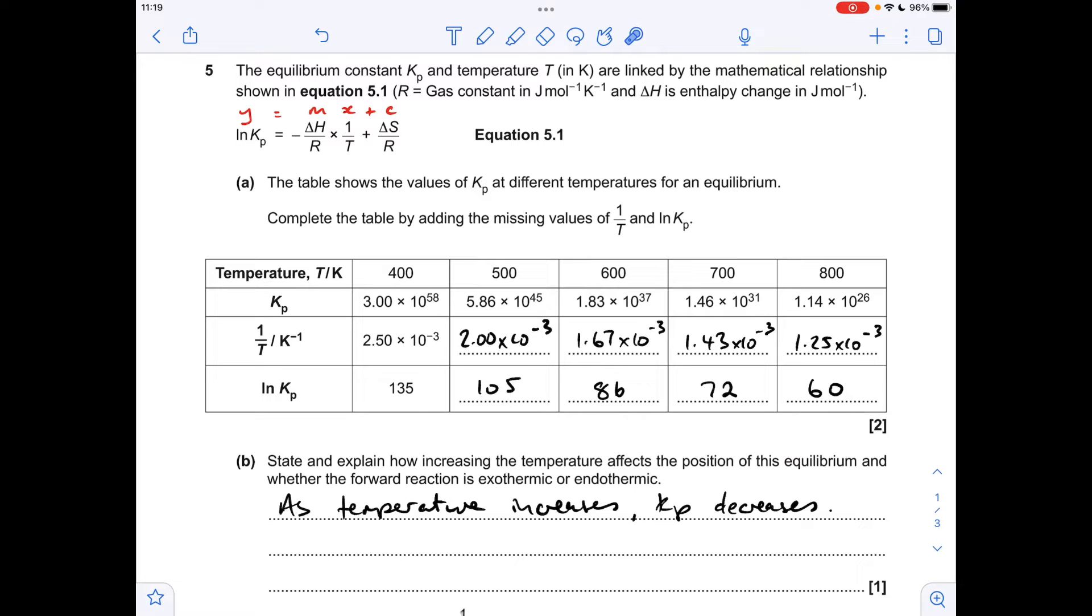So what that means is the increase in temperature is causing the equilibrium to shift to the left or backwards. So if we think about Le Chatelier's principle, an increase in temperature always favours the endothermic direction. So what that means is this backwards reaction is endothermic and therefore the forward reaction must be exothermic.